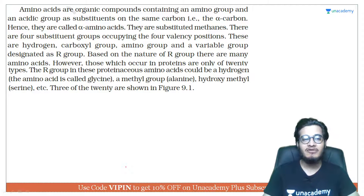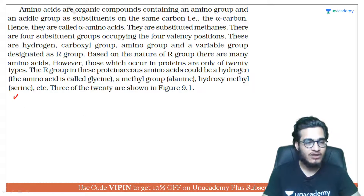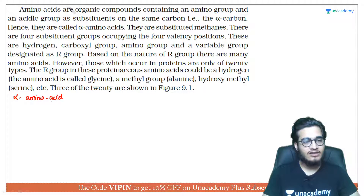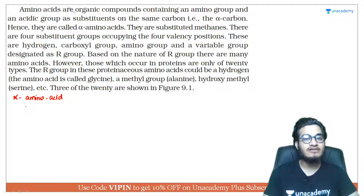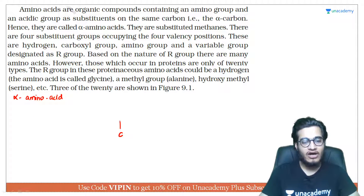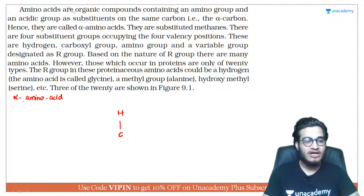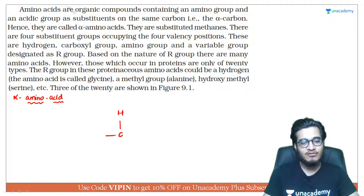Please make sure you use this code and share it with your friends as well. Now, let's try to understand the name alpha amino acid. An amino acid is an organic compound — there is no doubt about that because it is a biomolecule. Since it is a biomolecule, it will have carbon and hydrogen. And since we are calling it an amino acid, there will obviously be an amino group.